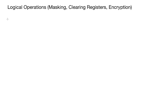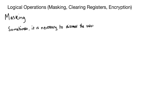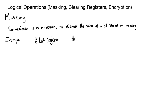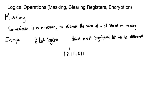The first one we're going to cover is masking, because sometimes it's necessary to discover the value of a bit stored in memory. It's important to read the exam question because it will specify how big your register is. In this example we're using an 8-bit register, so we need eight zeros or ones, and the exam question will also tell us which bit to find. In this example we're looking for the third most significant bit.